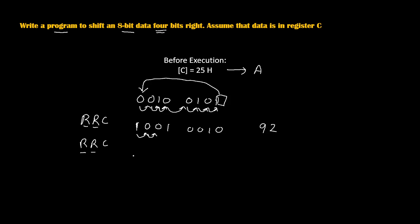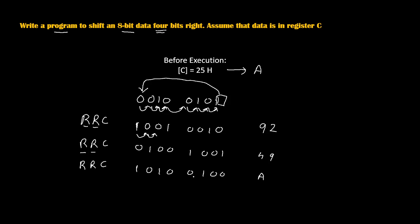After the second RRC, each bit shifts right again and the LSB moves to the MSB. The resulting bit pattern is 0, 1, 0, 0, 1, 0, 0 — giving us 10 (which is A in hexadecimal) and 4, so the data has now become A4H.